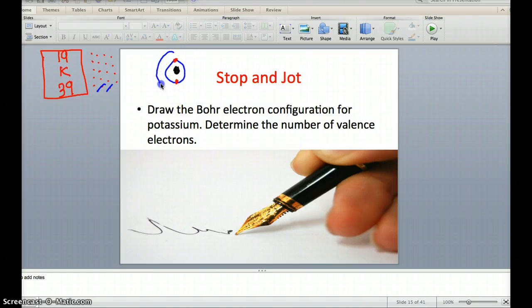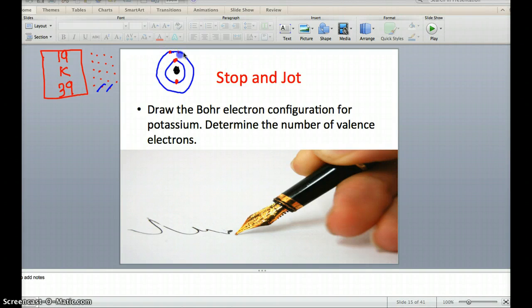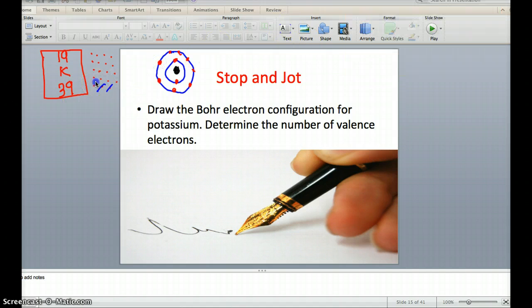We're going to take our next orbital and fill it with eight electrons. We'll cross off eight more of these. That leaves us with nine more.